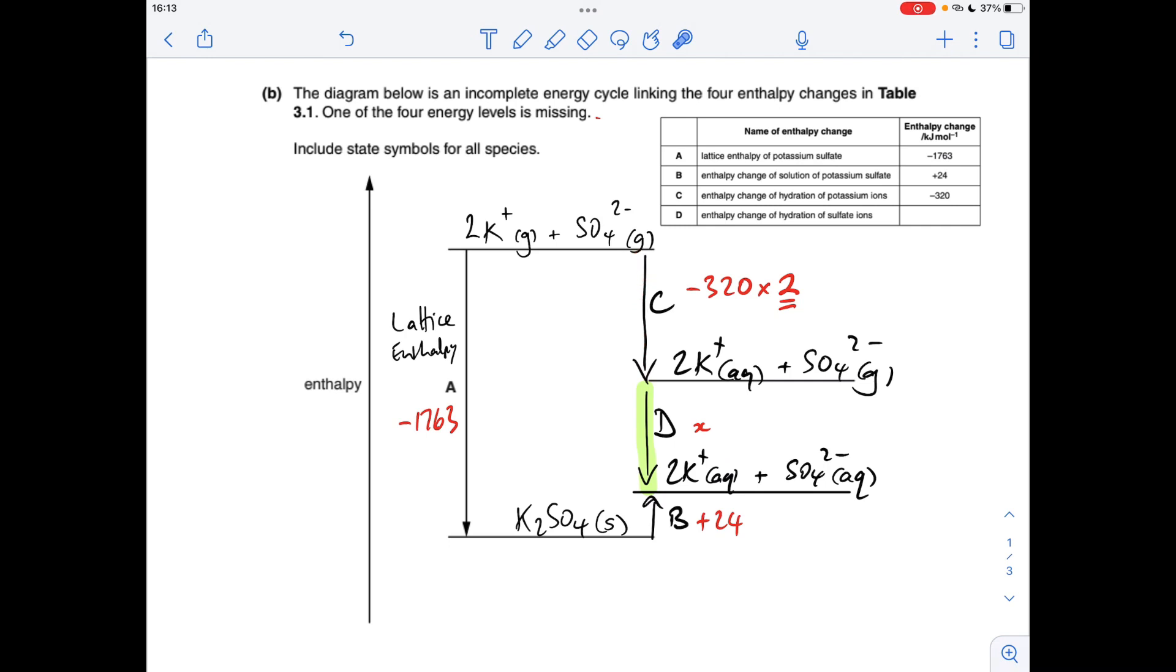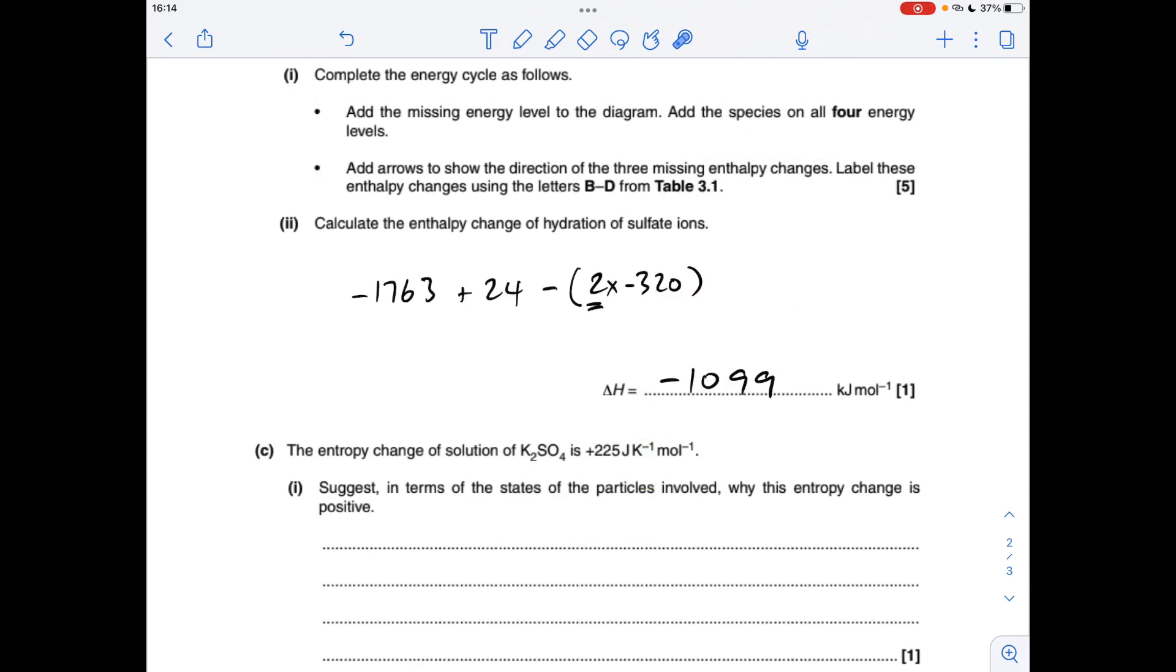You'll notice also because you've got two moles of potassium ions to hydrate, we need to double its enthalpy change of hydration. So that's giving me an enthalpy change of hydration of minus 1099 kilojoules per mole.